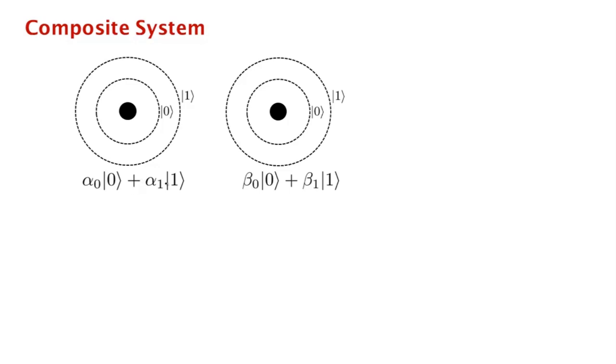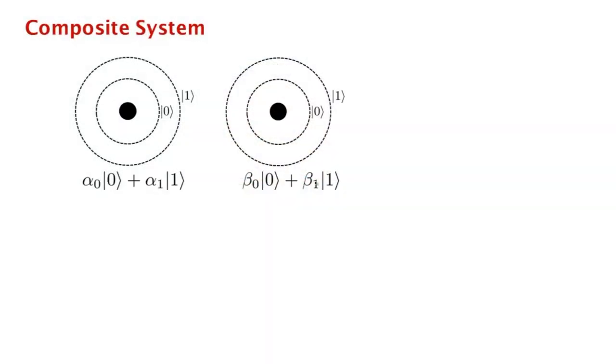In this video we are going to finally see the phenomenon of entanglement. Let's go back to our two-qubit system, but now let's assume we are given the state of each of the two qubits individually. We are told that the state of the first qubit is alpha_0 |0⟩ + alpha_1 |1⟩, and the state of the second qubit is beta_0 |0⟩ + beta_1 |1⟩. To find the state of the composite system, you just multiply the state of the first system by the state of the second system.